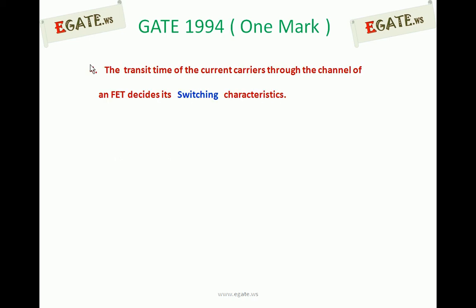The answer for this one is switching characteristics. So, the transit time of current carriers through the channel of an FET decides its switching characteristics. First of all, we see what is meant by transit time and how it relates to the switching characteristics.